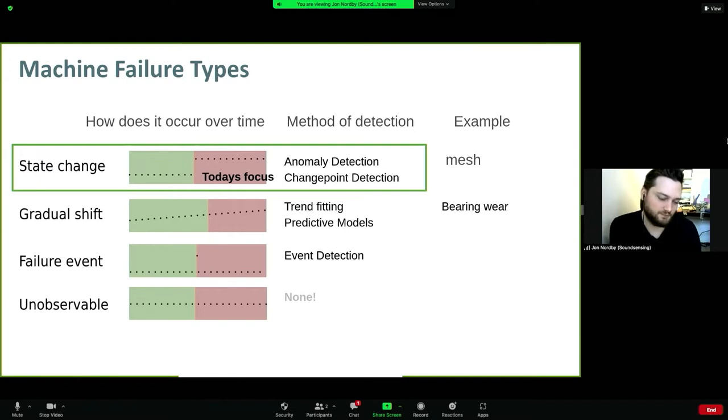We focus mostly on the top here, which we call a state change, where you have a relatively abrupt failure. This could actually happen at the end of a gradual shift. For example, if you have a bearing that's been operating okay for many years, towards the end lubrication might have gone out and it deteriorates faster. This is a threshold, the state change that we can detect. The techniques used are anomaly detection and change point detection.